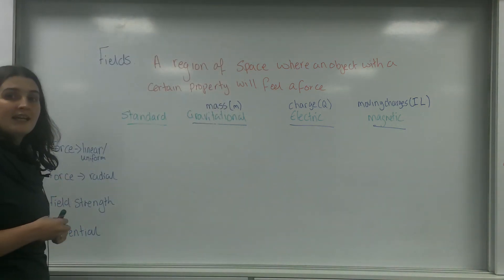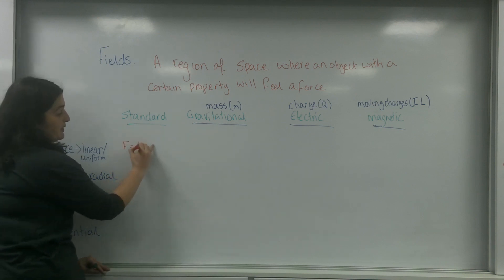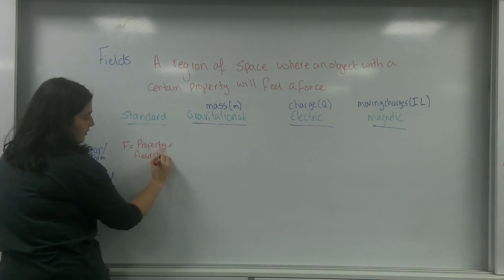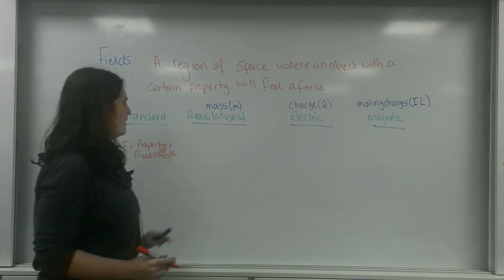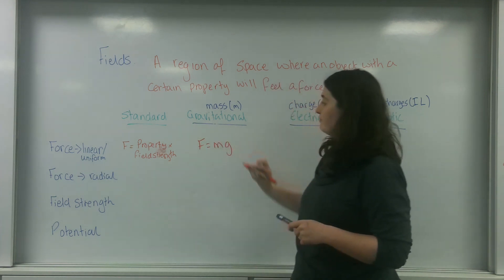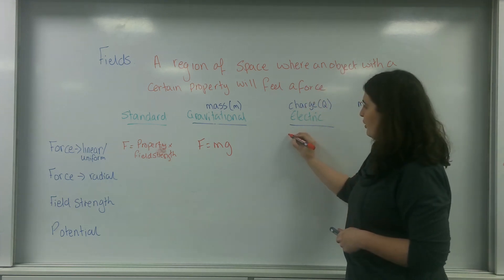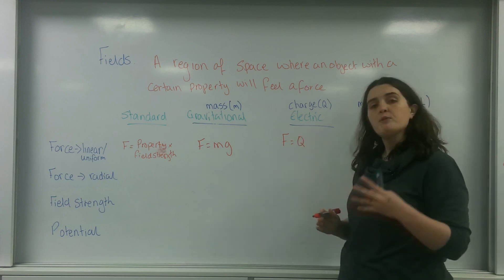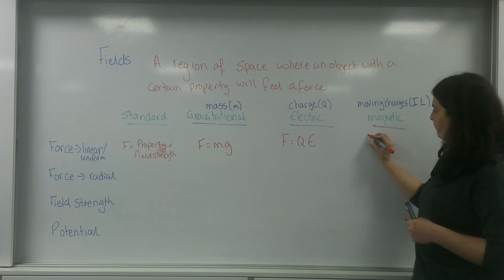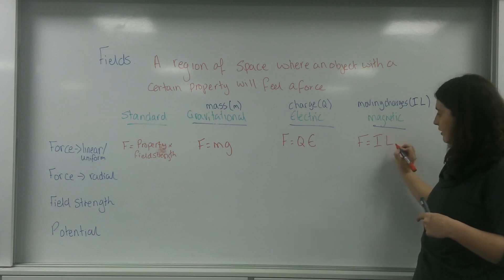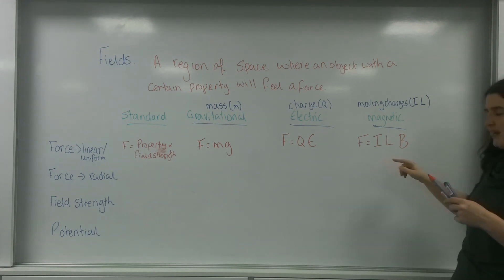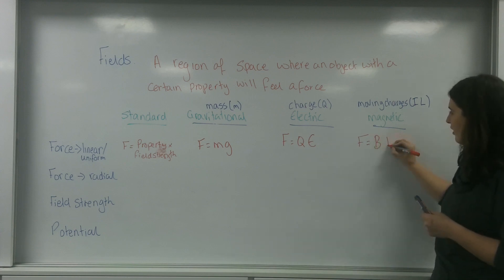The force in a uniform field is F equals the field strength times the property of that field. For gravitational fields, that's F equals mass times G. In an electric field, force equals charge times E, where E is the electric field strength. And for moving charges, force equals IL times B — the magnetic field strength measured in Teslas. You may have seen this formula written in its normal format as F equals BIL.